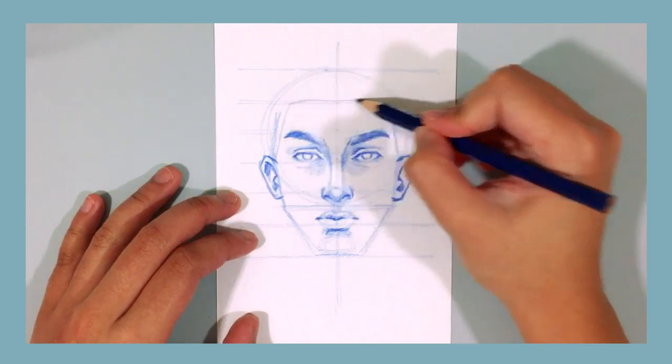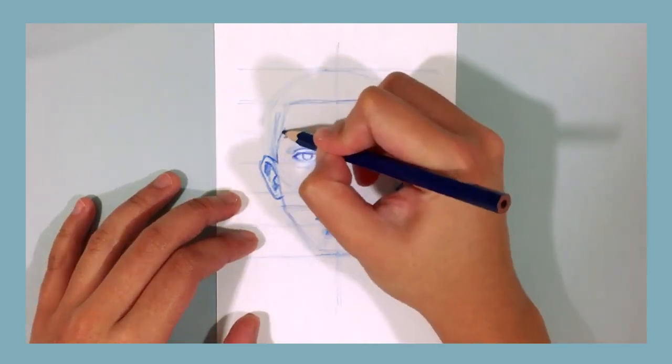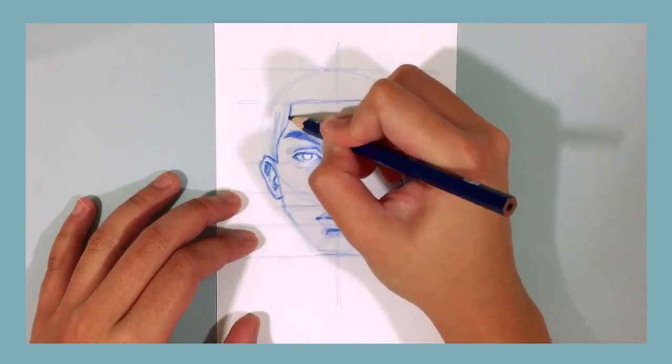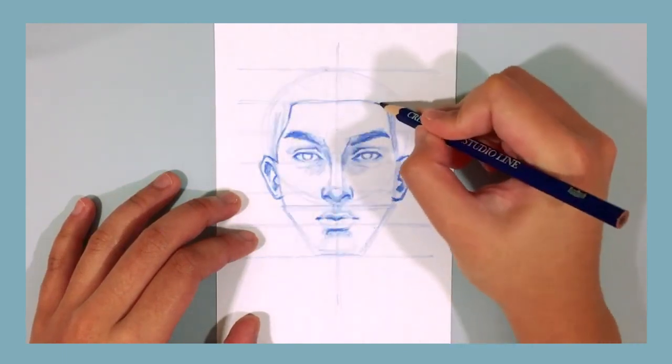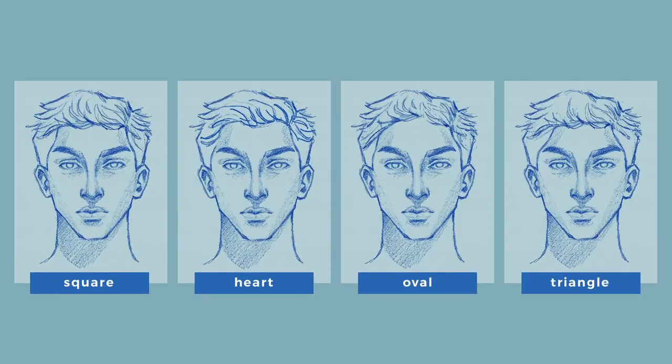For the hairline, let's go back up to line two and draw a square hairline, which is perceived to be more masculine. To draw this, just think as if you're drawing the upper half of a square. There are actually multiple hairlines that you can draw to create different face shapes, which you can see on screen, but let's stick to a square hairline.